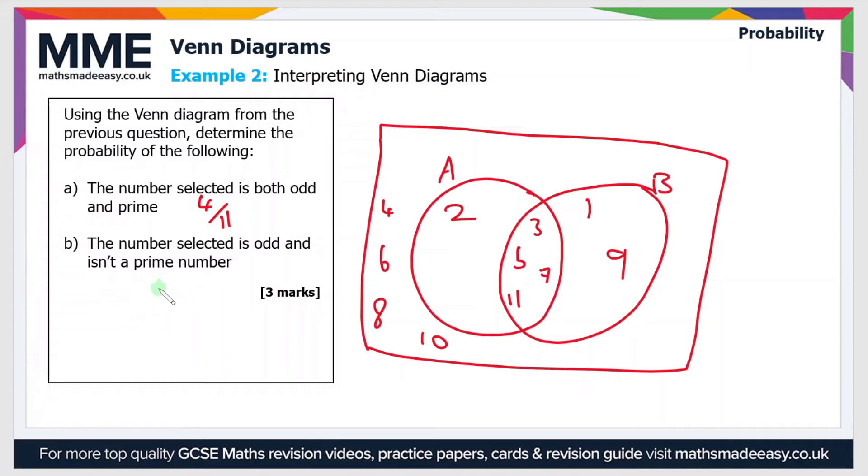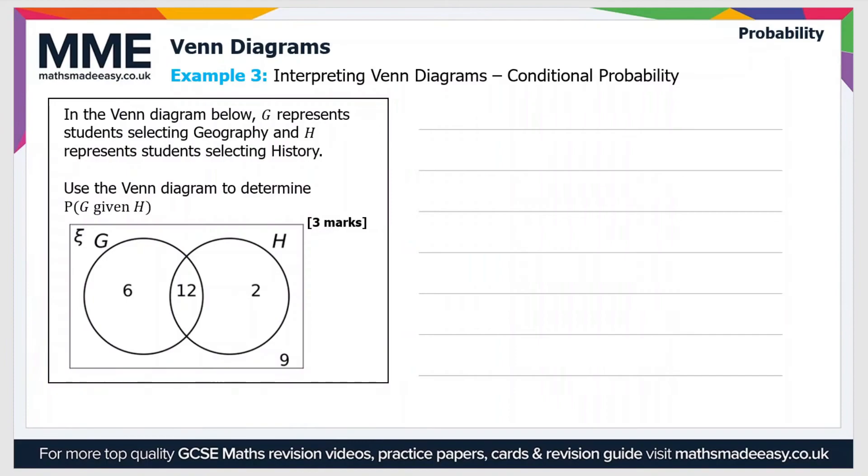And then part B, the number selected is odd and isn't a prime number. So there's only 2 numbers that are odd that aren't prime numbers. And these are 1 and 9. So therefore the probability is 2 out of 11.